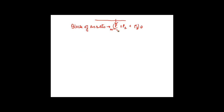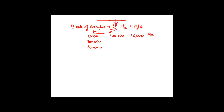Suppose you acquired one plant and machinery for 1 lakh in year one, 2 lakh in year two, 3 lakh in year three. In year one you claimed depreciation at 10%, so you claimed 10,000 and were left with 90,000 as the closing value, which became the opening value for the next year.